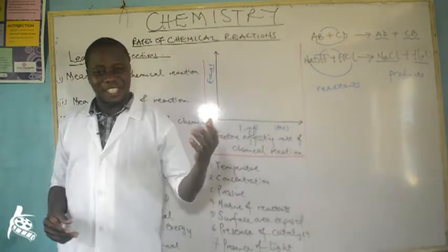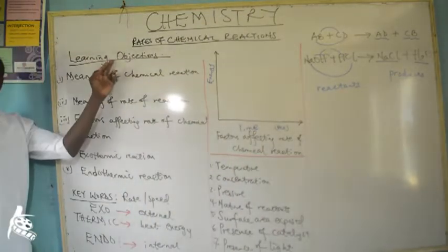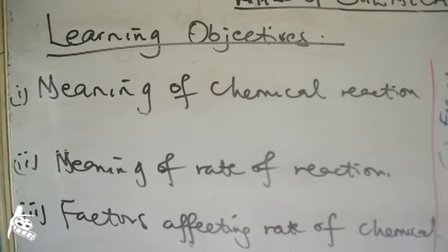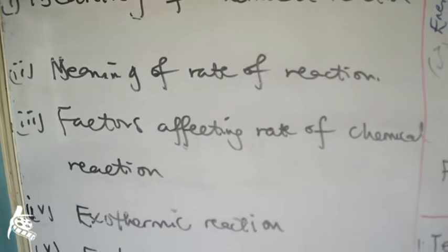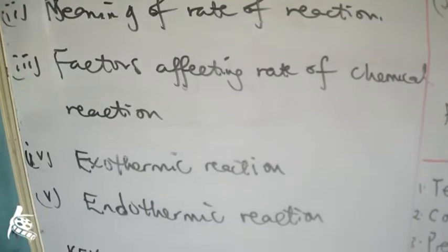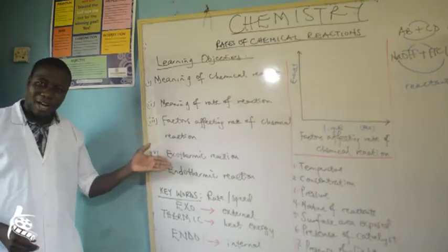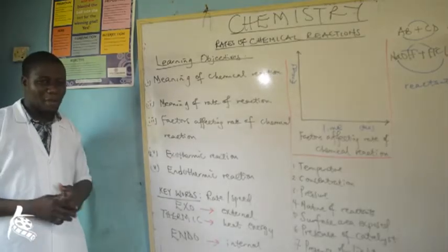In an attempt to buttress this, we will be looking at the following learning objectives: meaning of chemical reaction, meaning of rate of reaction, factors affecting rate of chemical reaction, exothermic reaction and finally endothermic reaction.